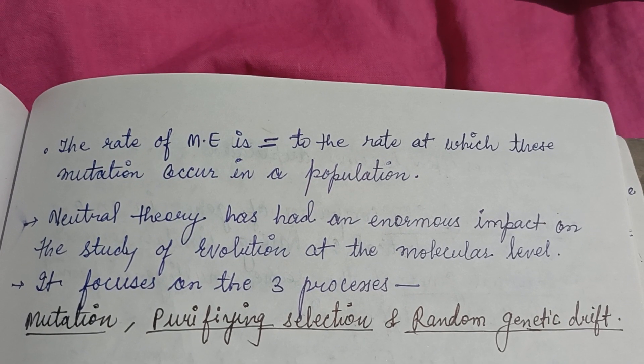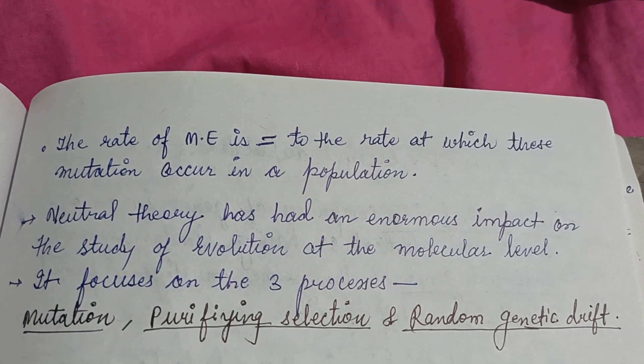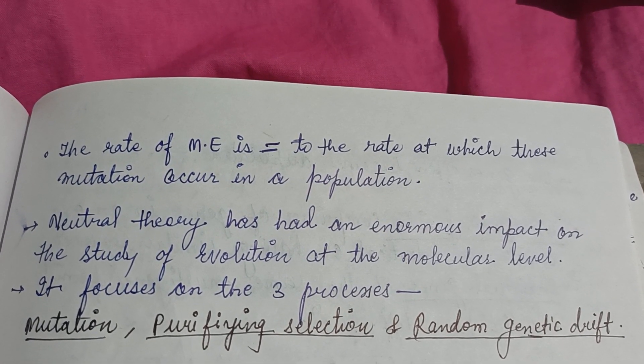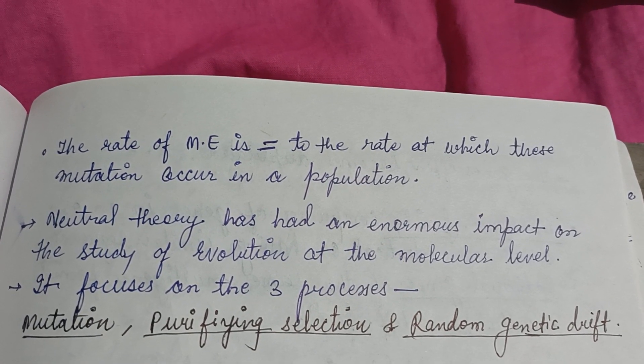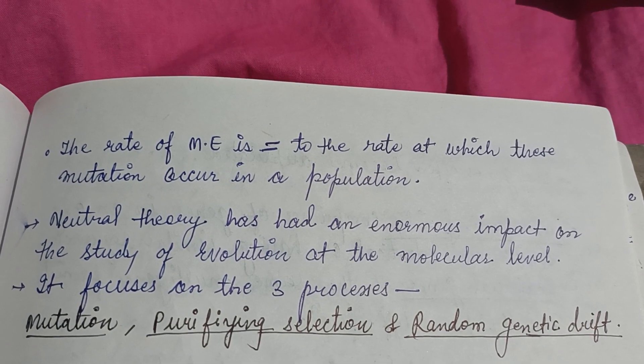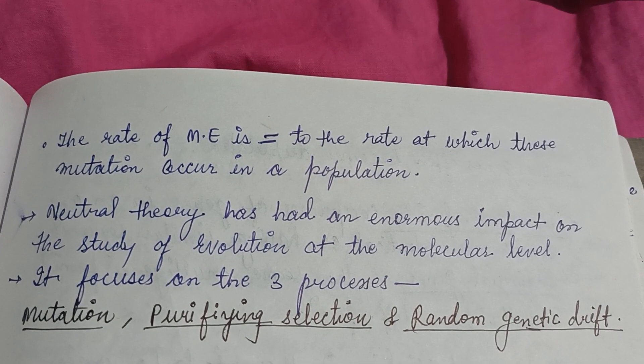The Neutral Theory addresses three processes: mutation, purifying selection, and random genetic drift.